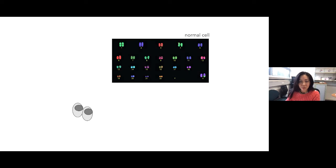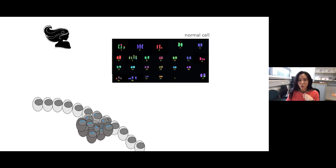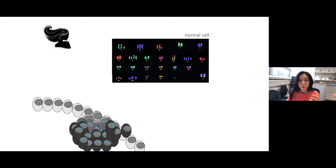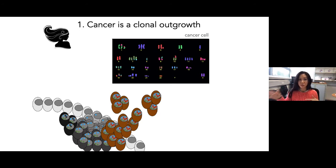Section one: basic principles about cancer and next generation sequencing. From conception, cells divide and accumulate mutations — every cell has its own slightly mutated version of the original genome. At some point, one cell may acquire a proliferative advantage and additional mutational abnormalities and come to dominate that compartment, eventually turning into a cancer. The important point is that cancer is a clonal outgrowth of the original cell — the final common ancestor that eventually became that cancer.